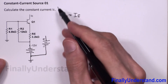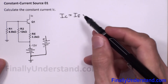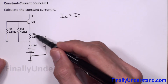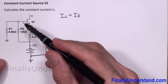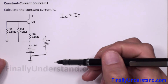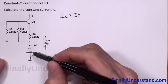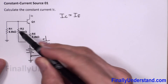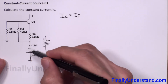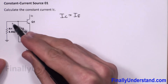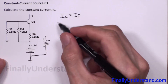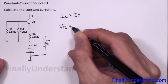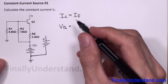The positive terminal of VCC is connected to the circuit. To find the current through the emitter and resistor RE, I need to find the voltage at the base of the transistor. I realize I have nothing else but a voltage divider built from two resistors, with VEE as the voltage source. So I'll find VB using the voltage divider formula.